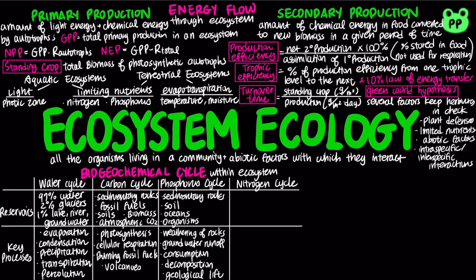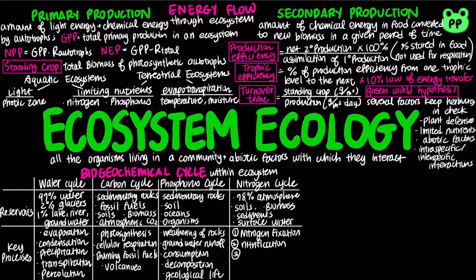Nitrogen is a component of amino acids, proteins, and nucleic acids. 78% of the biosphere's nitrogen is found in the atmosphere; the rest is found in soils, biomass, sediments, and surface water. Key processes in the nitrogen cycle include nitrogen fixation, nitrification, assimilation, and denitrification.